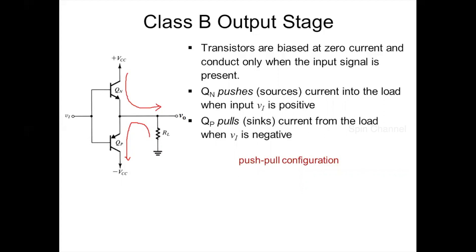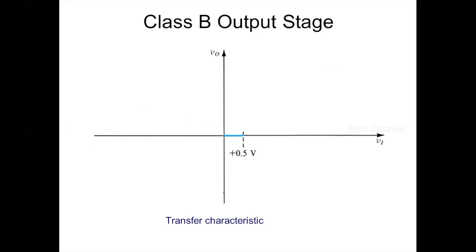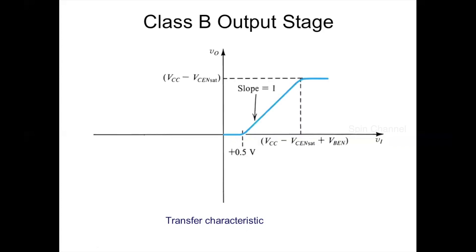Now let us plot the transfer characteristics of the Class B stage. For the positive half cycle, up to Vi equal to 0.5V, transistors QN and QP are completely cut off and V0 equals 0 volt. When Vi is greater than 0.5V, the output follows the input with the positive limit of VCC minus VCE saturation, which is the maximum positive limit.